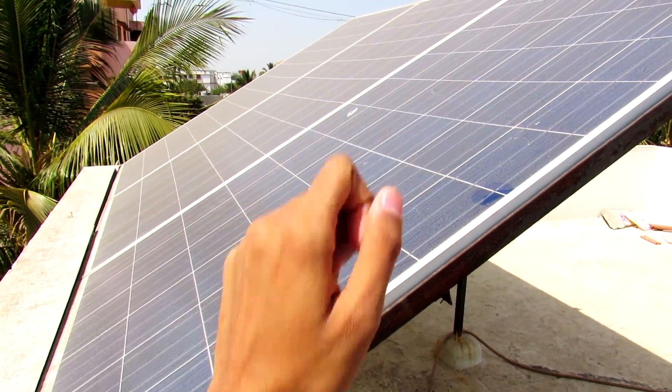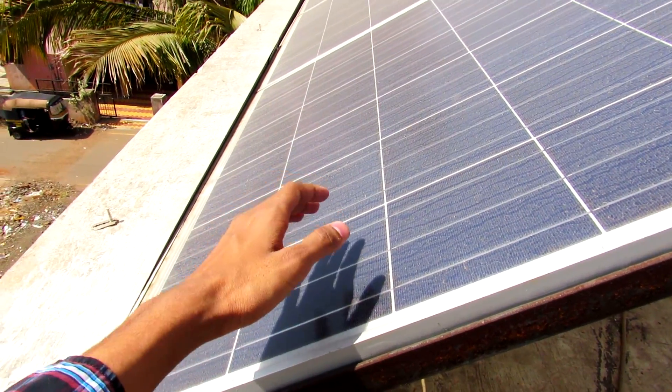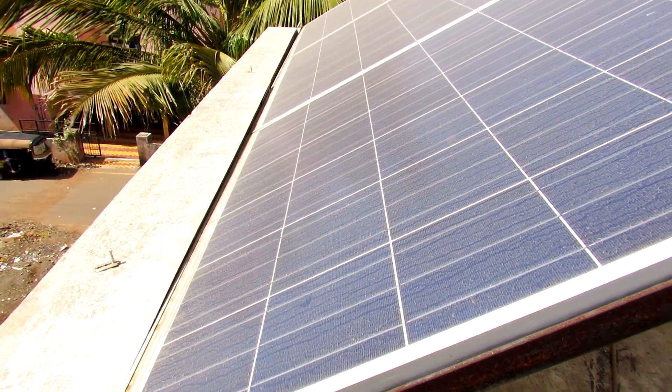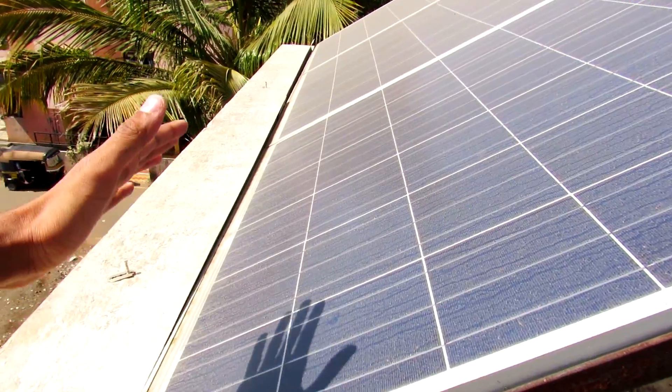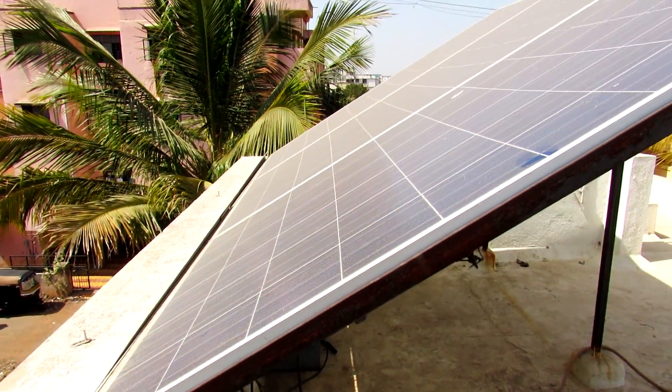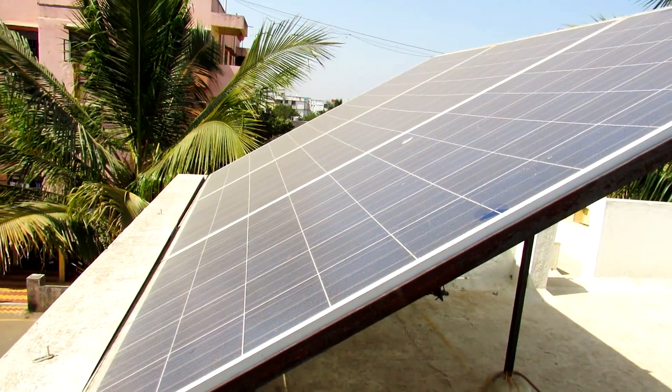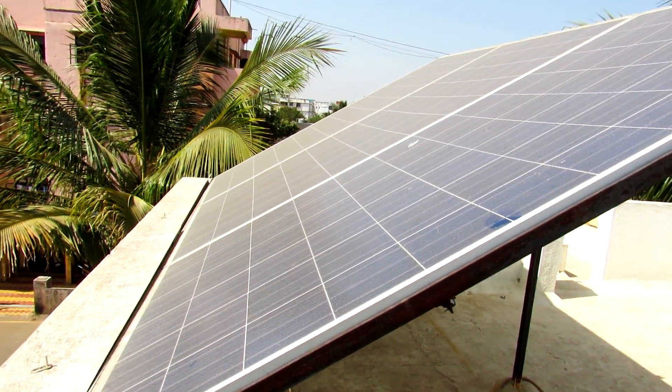So if you connect 72 diodes to this panel, you can reduce the loss if there is a tree shadow on this panel, or there is a certain scenario like there is a building which is casting a shadow on your panel and you can't move the panels.